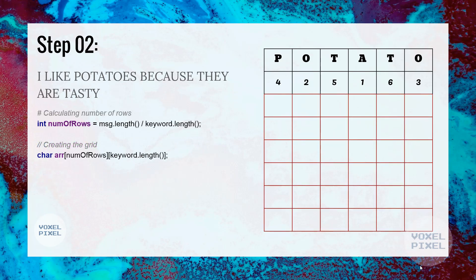Next, we will determine size of the grid. For that, we will first calculate the number of rows and we can obtain that by length of the message divided by length of the keyword.